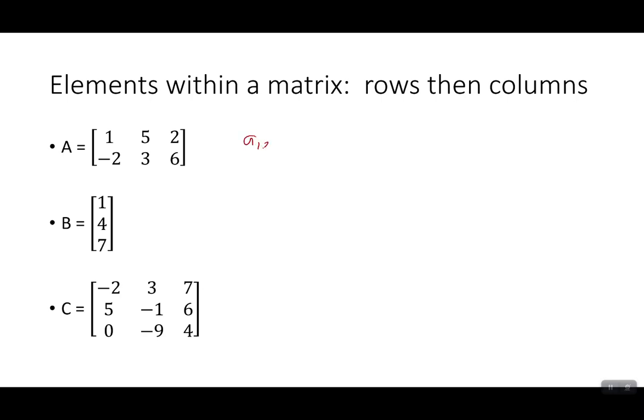Like if I talk about A one two, one is the number of row, and then the two is the column. So A one two, with a little a, is referring to the matrix A, and you're looking at the item in the first row, second column. So A one two would be this element, would be just the five there.